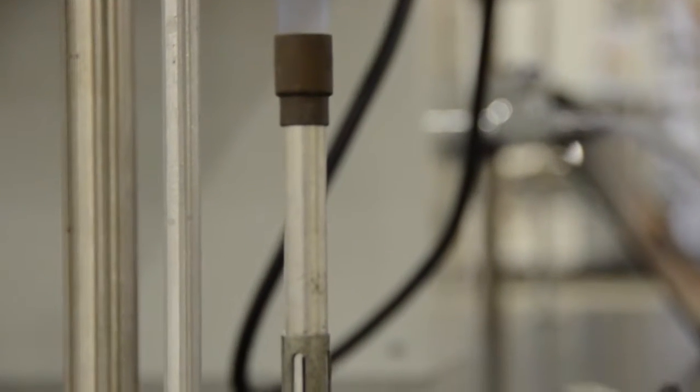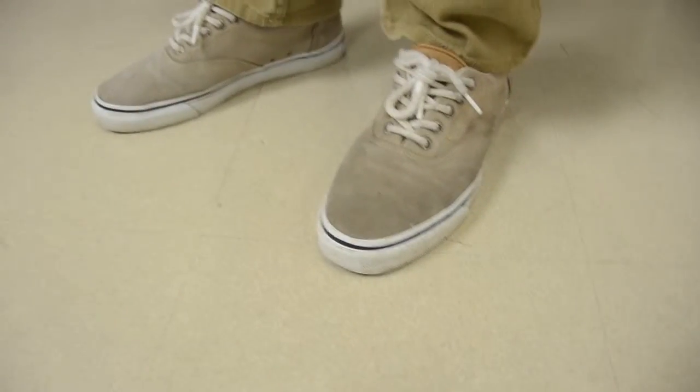Before you enter the lab, you first have to make sure that you have all of your PPE, your personal protective equipment. This includes a 100% cotton lab coat, lab glasses or goggles, long pants, and closed-toed shoes. Once you have everything on, you are ready to enter the laboratory.